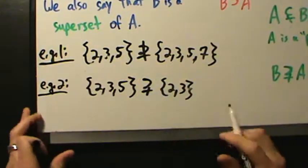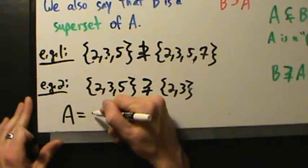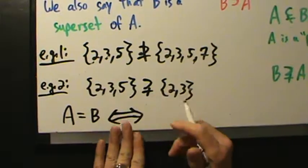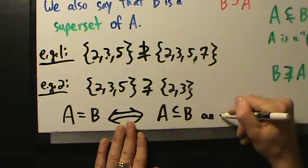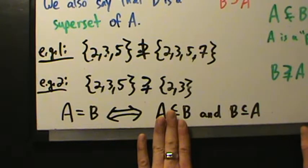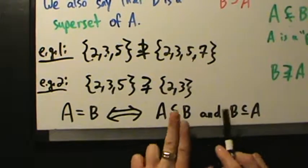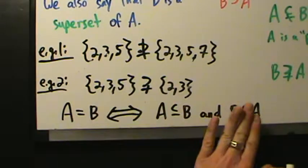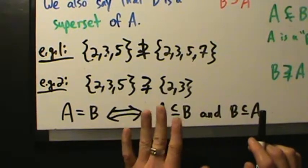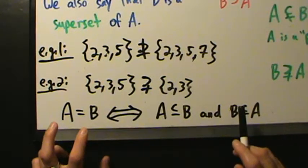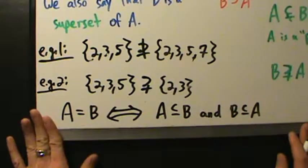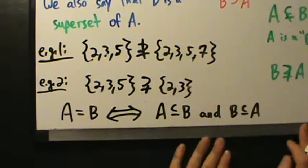One more important point: we talked about equality of sets earlier — two sets are equal if they have the same elements. So A equals B is exactly the same as saying A is a subset of B AND B is a subset of A. So if you ever have to prove two sets are equal, you first prove one is a subset of the other, and then prove it the other way around.